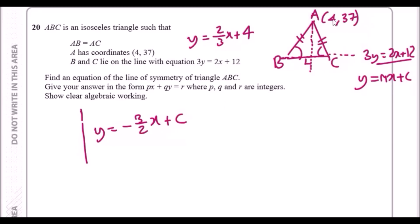Let's plug in (4, 37). When y is 37 and x is 4, we have 37 = -3/2(4) + c, which is -12/2 + c.